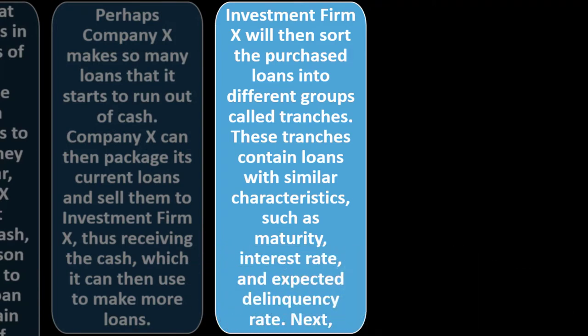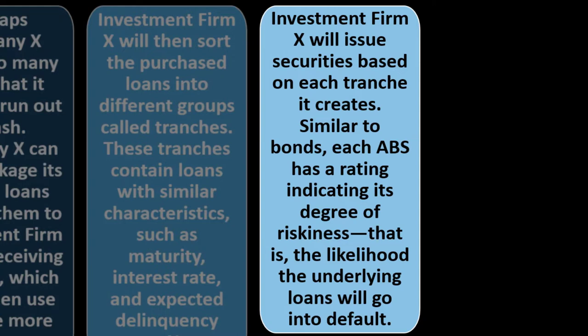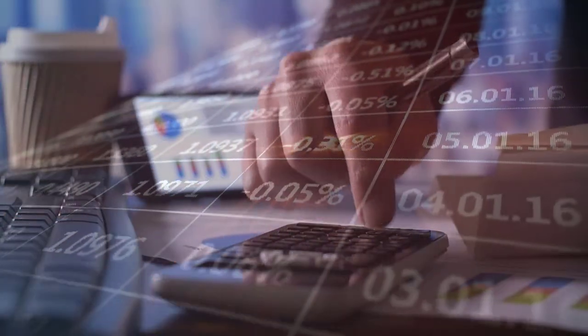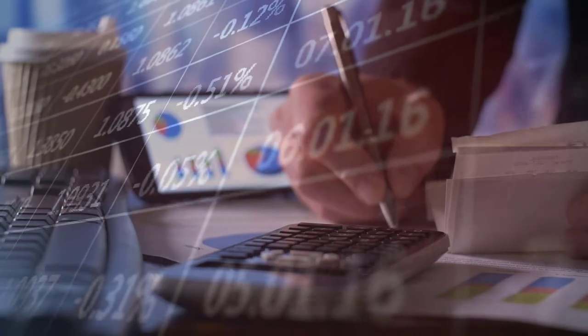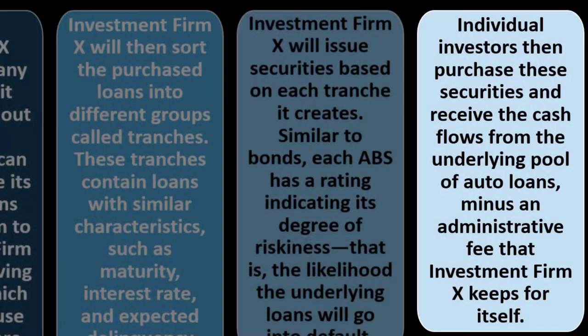Investment Firm X will then sort the purchased loans into different groups called tranches. The tranches contain loans with similar characteristics such as maturity, interest rate, and expected delinquency rate. Investment Firm X will then issue securities based on each tranche, similar to bonds. Each ABS has a rating indicating its degree of riskiness — the likelihood the underlying loans will go into default. Individual investors then purchase these securities and receive the cash flow from the underlying pool of auto loans, minus an administrative fee that Investment Firm X keeps.